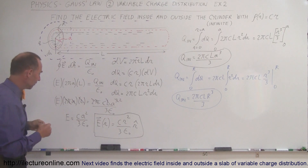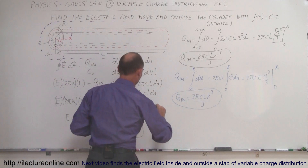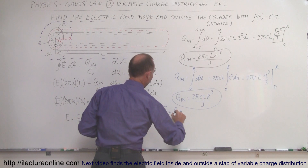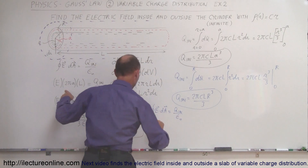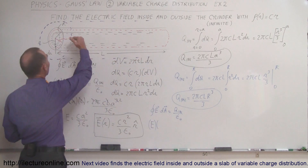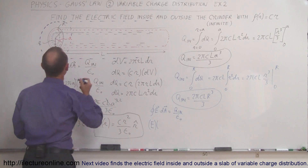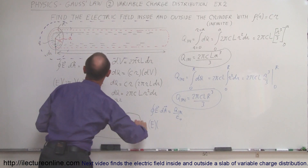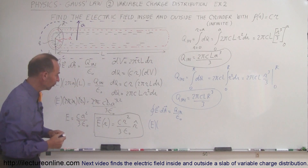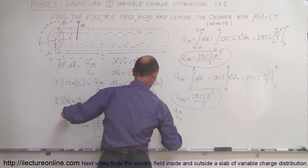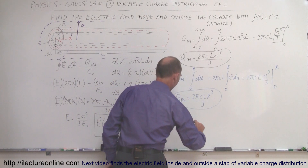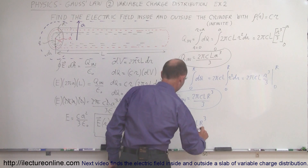For the outside equation: the surface integral of E dot dA equals Q inside divided by epsilon sub nought. Now E dot dA becomes E times the Gaussian surface area — we go all the way out to distance A from center — so it's 2πA times length L. Setting that equal to Q inside, which is 2πCL R cubed over 3, divided by epsilon sub nought.